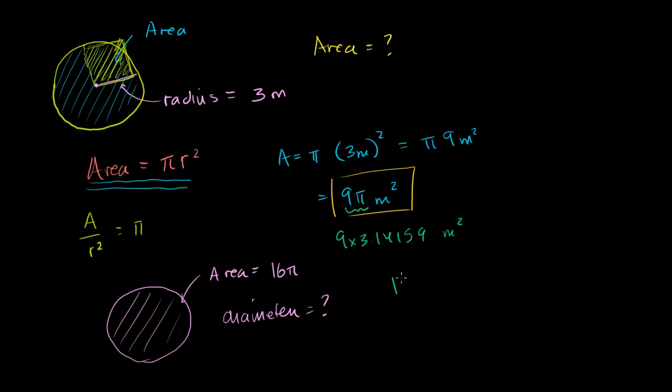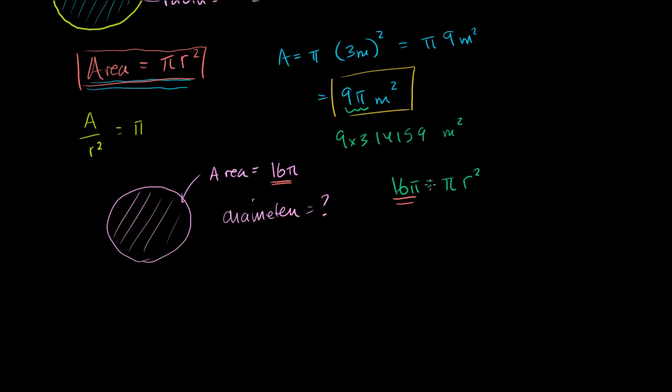So the area, 16 pi, is equal to pi times our radius squared. I'm just applying this formula. We're just going to keep applying this formula over and over again when we're dealing with area. So area, which we've been told is 16 pi, is equal to pi times radius squared. Now, if we divide both sides of this equation by pi, we get 16 is equal to r squared. And then you take the square root of both sides, and you get 4 is equal to r.